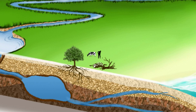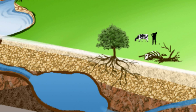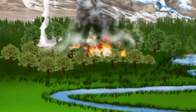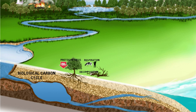But there is also a biological carbon cycle that deals with the inputs and outputs of carbon in and out of the soil and water over a much shorter timeframe, via the processes of photosynthesis, respiration, decomposition, and burning.